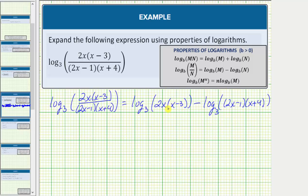This will expand into the sum of three logs. So next we have log base three of two plus log base three of x, and then finally plus log base three of the quantity x minus three.